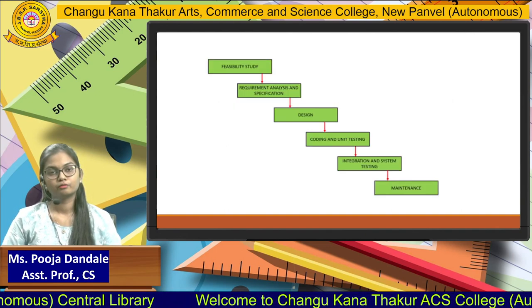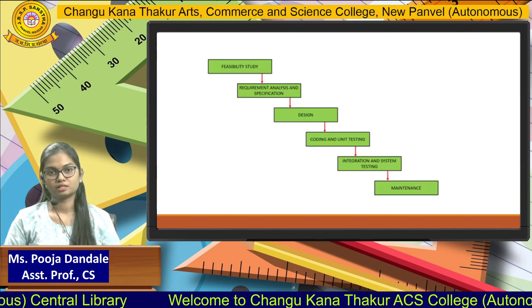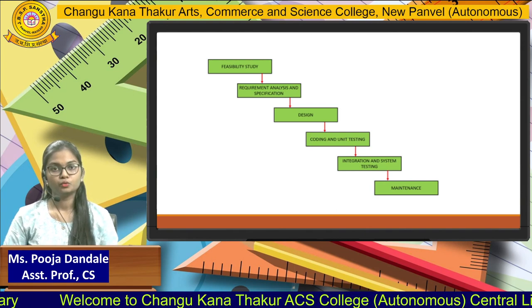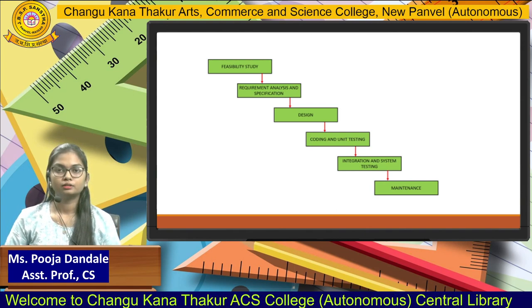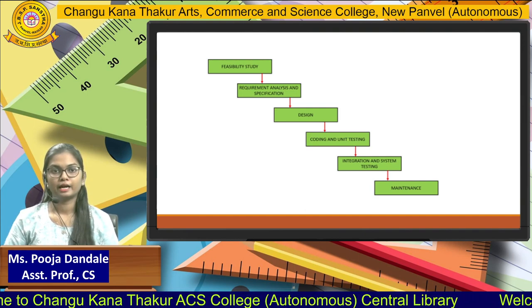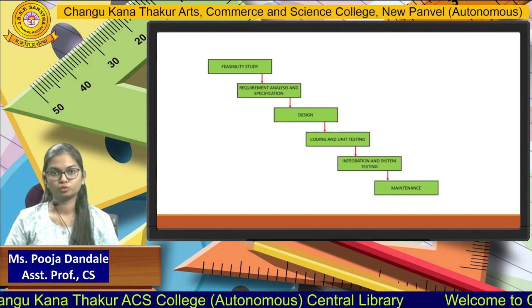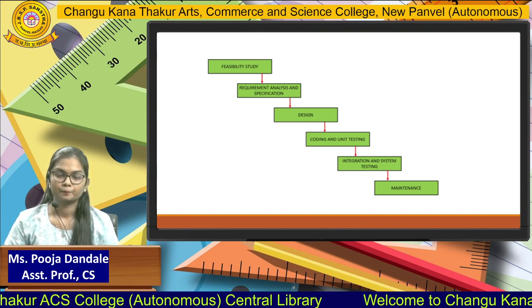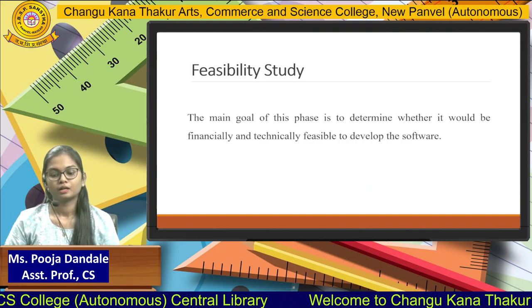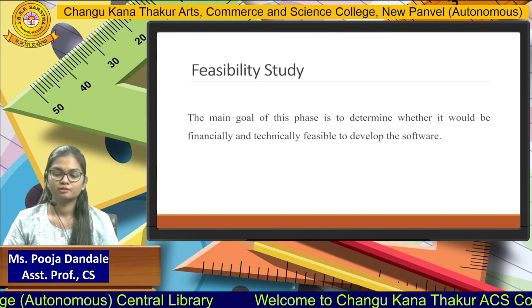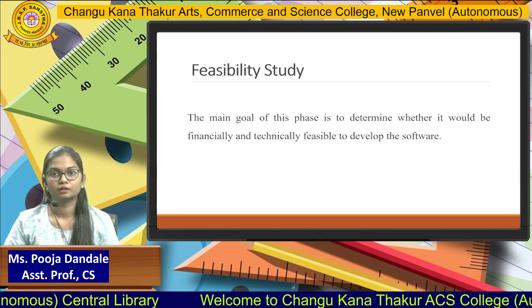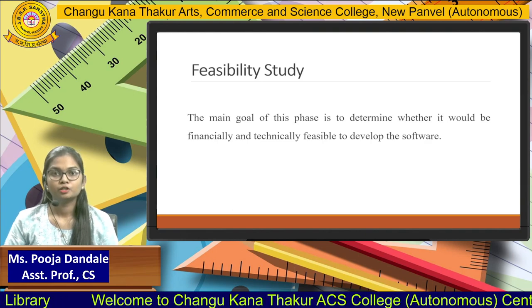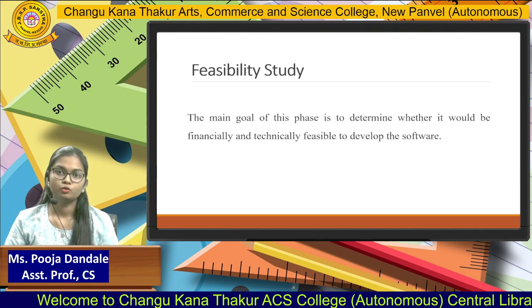We'll go through these phases one by one and see how the waterfall model actually works. On the screen we can see the waterfall model and its different phases. The first one is the feasibility study. The main aim of feasibility study is to determine whether it would be financially and technically feasible to develop the product.